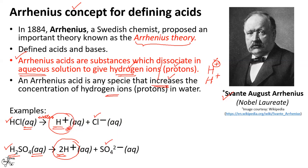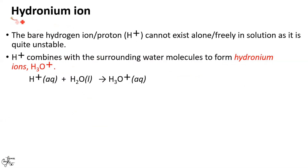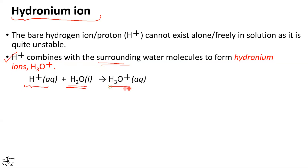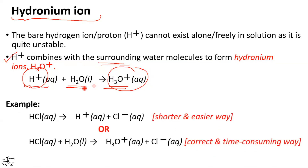This hydrogen ion or proton is quite reactive and unstable, and thus it cannot exist alone. It actually exists as the hydronium ion H₃O⁺, which is formed when H⁺ combines with a surrounding water molecule: H⁺ + H₂O → H₃O⁺. In actual practice, both H⁺ and H₃O⁺ are used interchangeably by chemists.